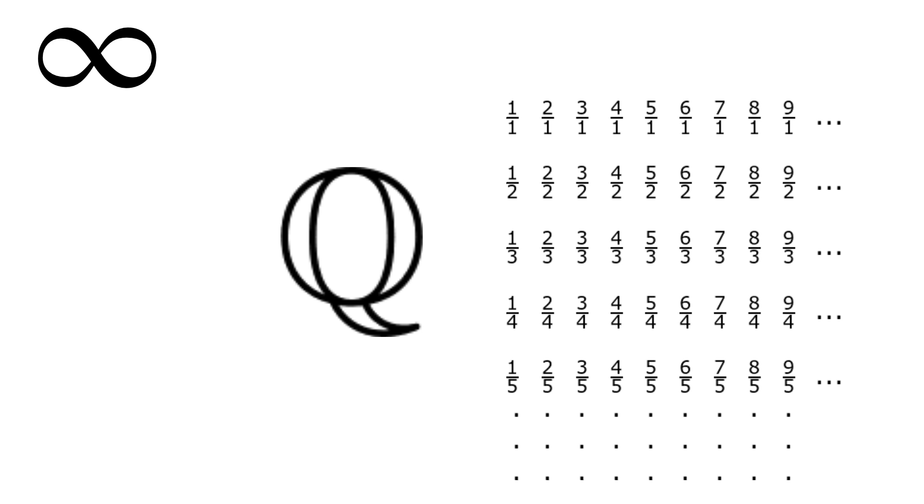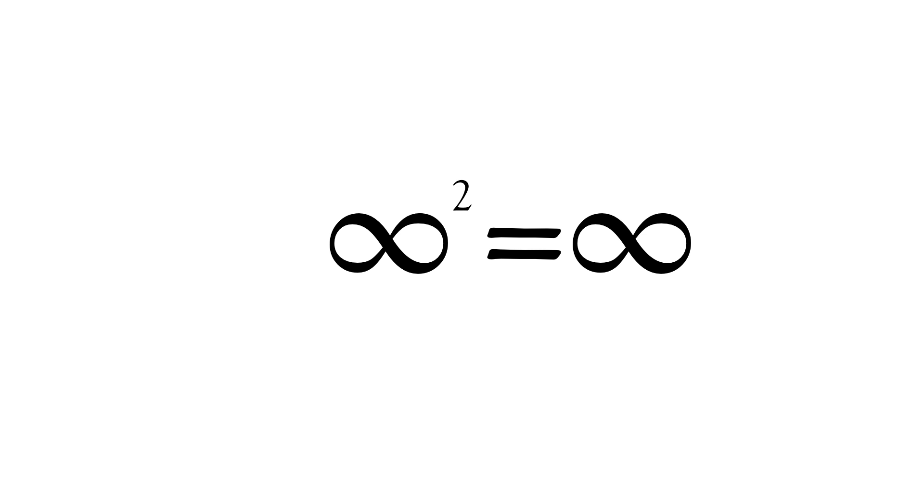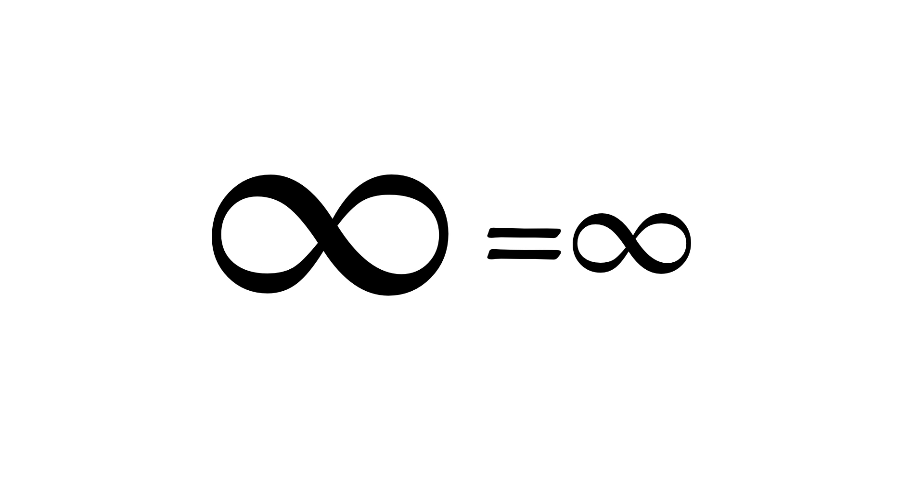So if we go back to our original problem, infinity times m equals m. If we sub in m equals infinity, then we get infinity times infinity equals infinity, or rather, infinity squared equals infinity. Now, the infinity on the left is indeed also infinity, but it's an infinitely larger infinity than the infinity on the right. Just like how the set of all fractions is infinitely larger than the set of all integers.